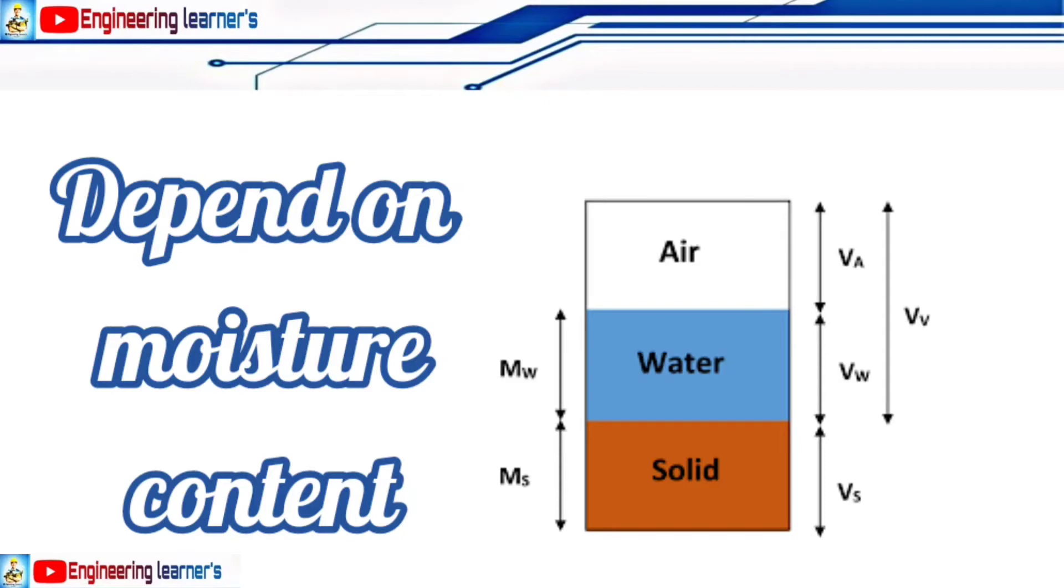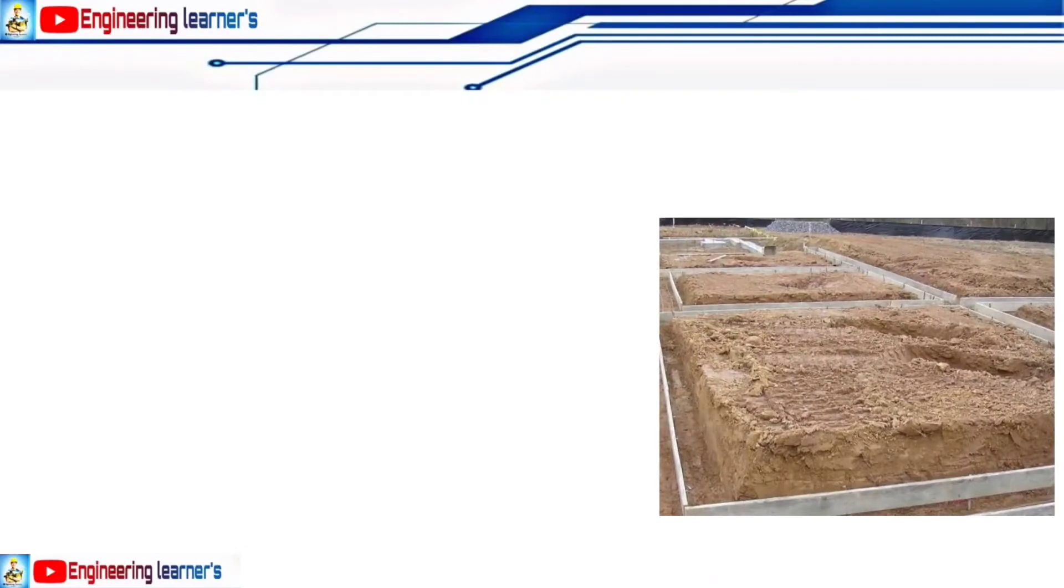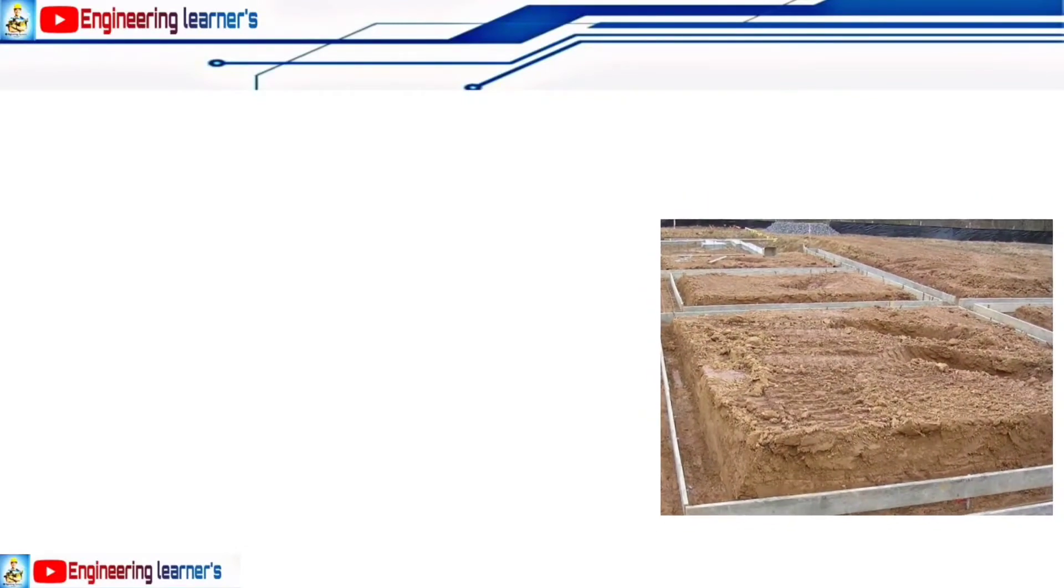It means that they are directly proportional to each other. If one is increasing, the other should also increase. Okay, I assume a soil sample which length is 10 meters, its breadth is 5 meters,